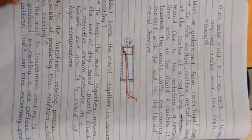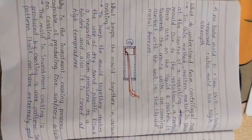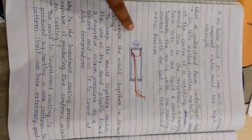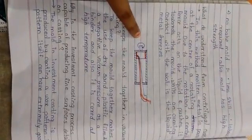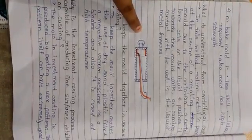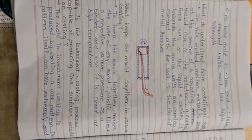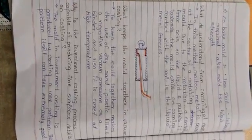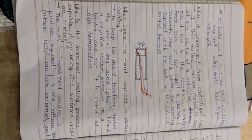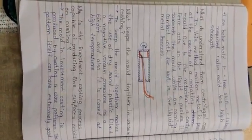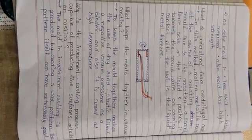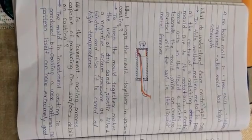Next question: what do you understand by centrifugal casting? Here is the explanation and a small diagram. If you draw the diagram, there is one extra mark for this question. Next question: what keeps the mold together in vacuum casting? Then: what is investment casting and is it capable of producing fine surface details on castings?